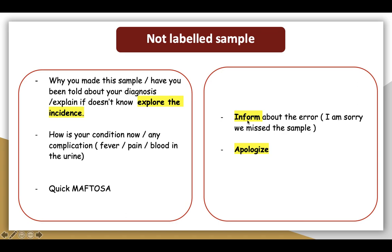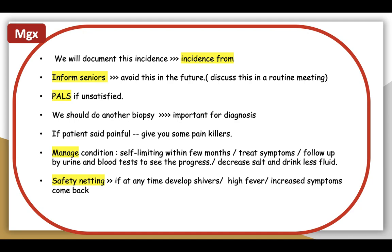Then start immediately by informing the patient about the error. Be honest — tell them: 'I am sorry, we missed the sample and we couldn't have the result of the test here with us today.' Apologize to the patient. Remember, don't waste a lot of time apologizing — move on to the next step of convincing the patient to take another sample and informing them about the steps taken to avoid medical errors from happening again.